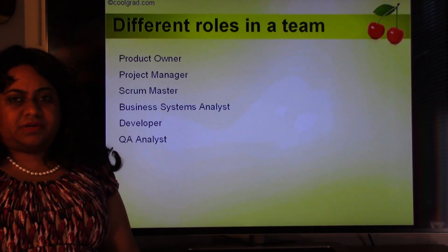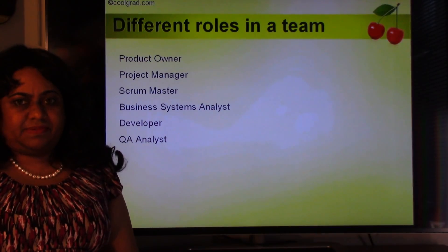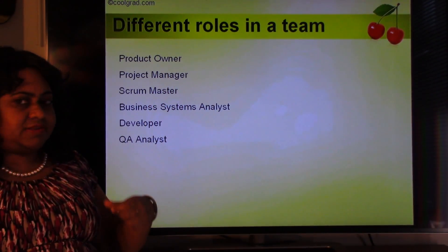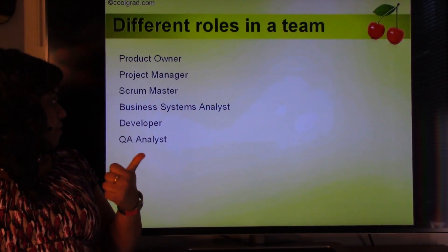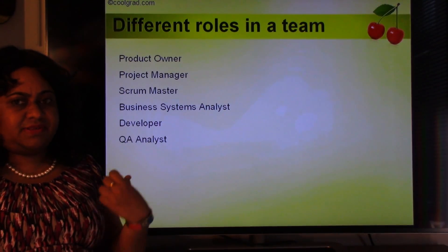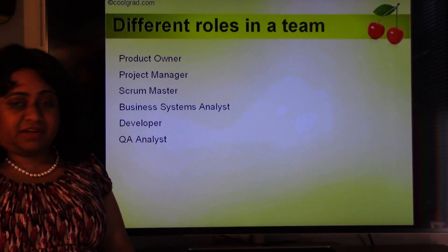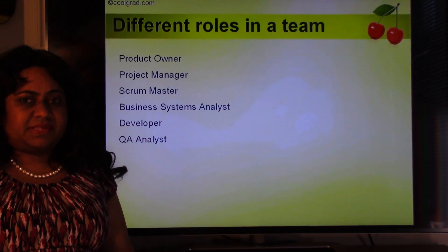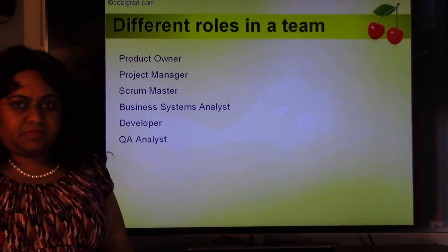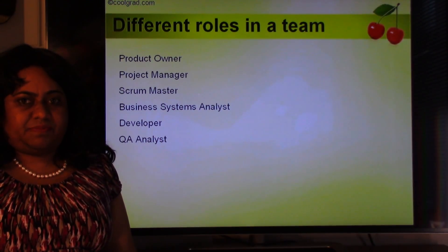Let's talk about the different roles in an Agile team. We have product owners, project managers, scrum masters, business systems analysts, developers, QA, and sometimes technical architects. These are the basic roles in an Agile project team.